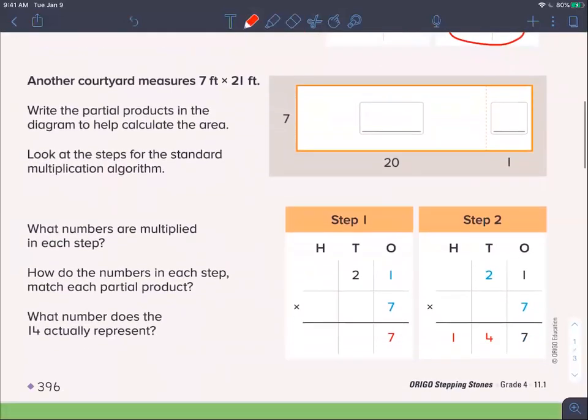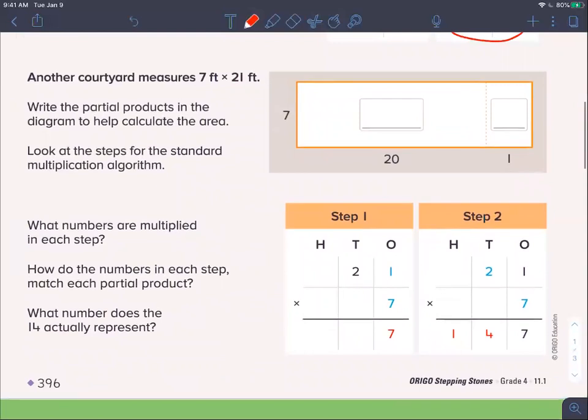Moving down, they have another word problem. Another courtyard measures 7 feet times 21 feet. Using partial products, 7 times 20 is 140 because I know 7 times 2 is 14, and 7 times 1 is just 7. If we were going to add that, 140 plus 7. I know you can do it in your head, but if we were going to prove it with the addition algorithm, we'd have 147.